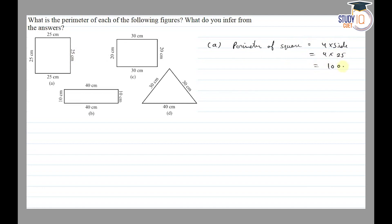So 4 into 25 is our 100 cm. Part (b): this shape is a rectangle.